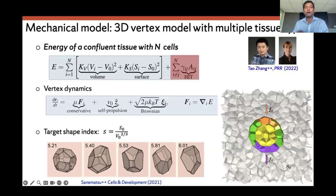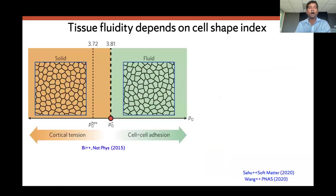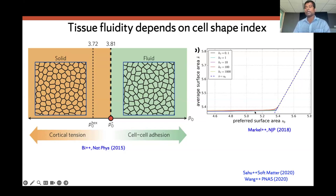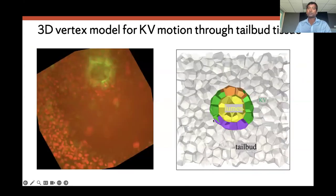It has been shown that for smaller values of the shape index, cells behave like a solid, and for larger values they behave like a fluid where cells can change their neighbors. This is the Lisa and Max work in the 3D vertex model showing a solid-to-fluid transition as you go from shape index 3.8 in 2D — and around 5.4 in 3D. So we can vary the tissue fluidity in our model, and by changing this shape index and the forces from the anterior and posterior, we can probe the dynamics.